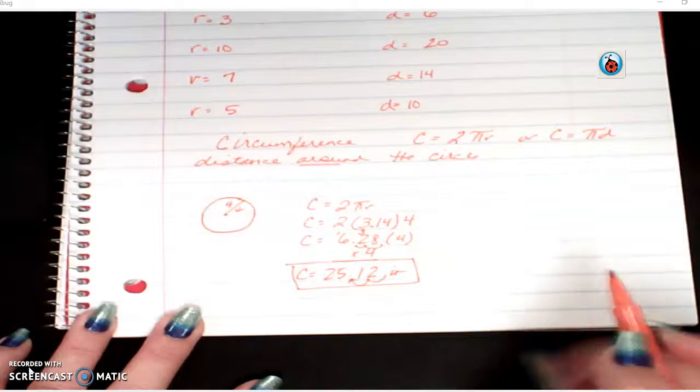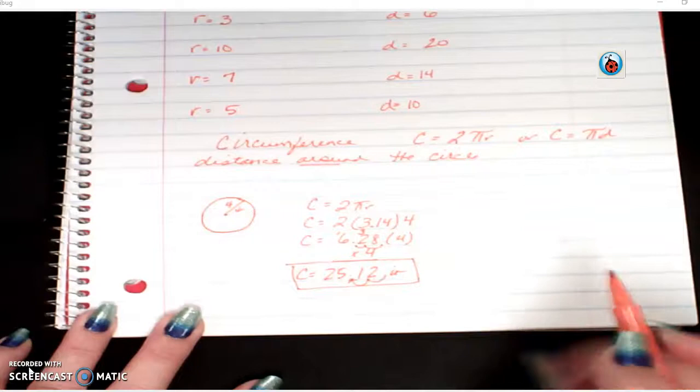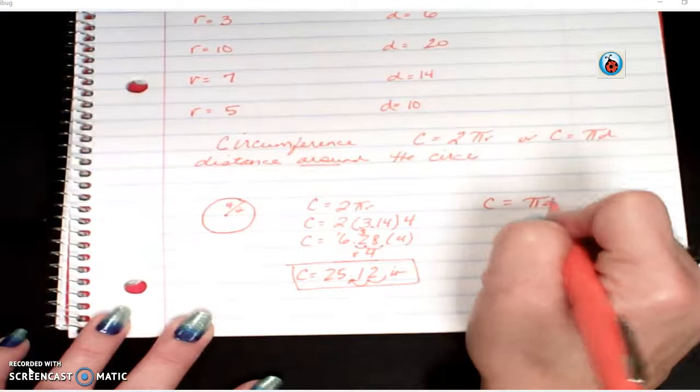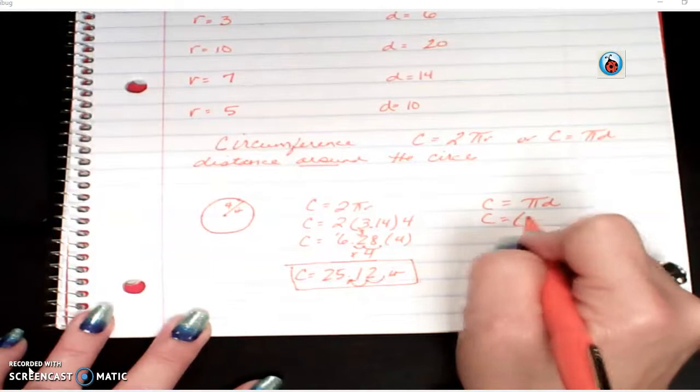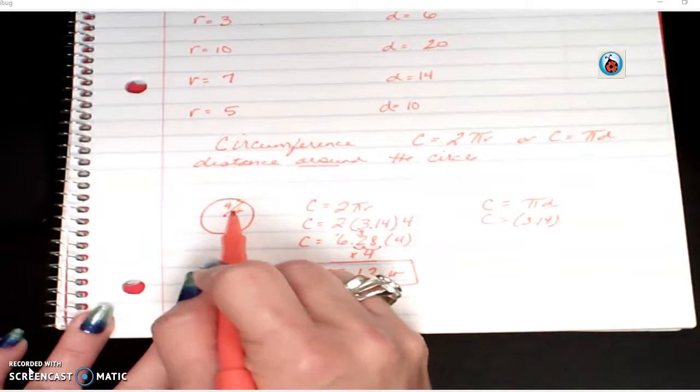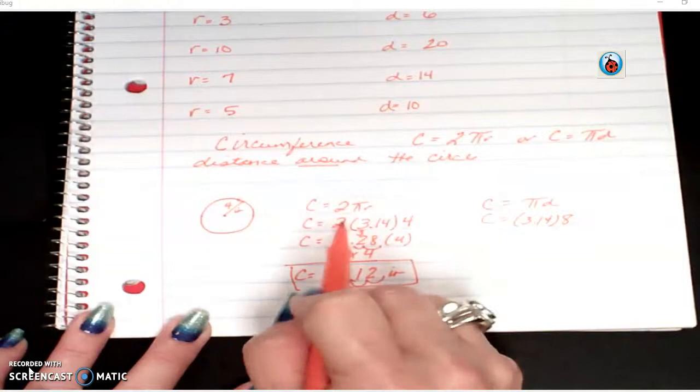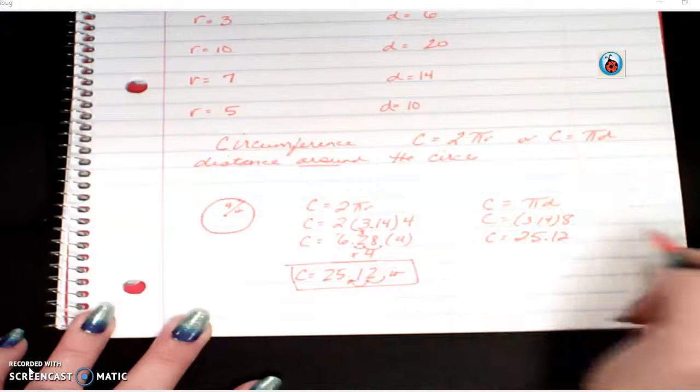Now, if I had the same shape, and I wanted to use pi d, I would simply have to change the radius and calculate the diameter. So if the radius was 4, the diameter would have to be 8. Well, right here, if I had said 2 times 4, that would have given me the 8 anyways. So my answer is still 25 and 12 hundredths inches.